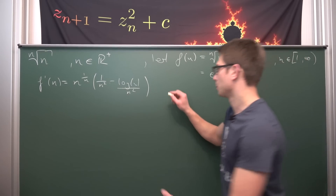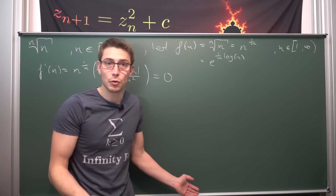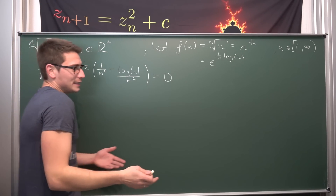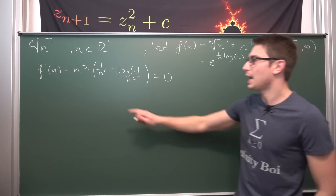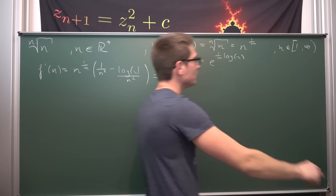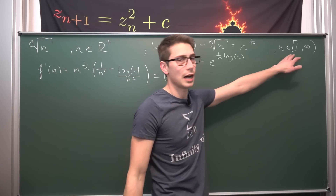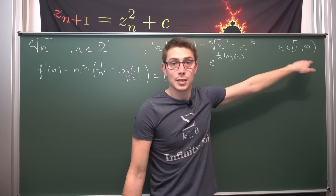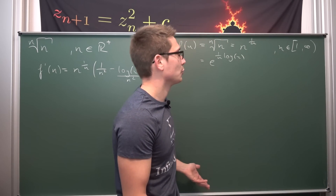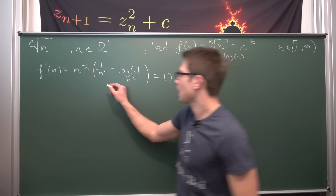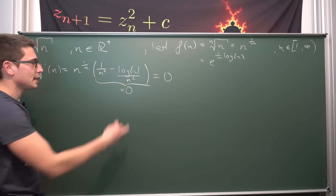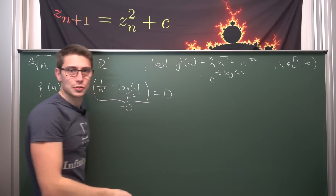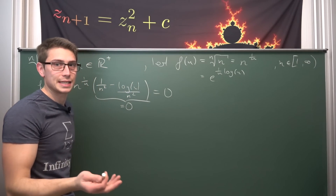We set the first derivative equal to 0 because we want to find where the slope is 0 — at a maximum or minimum. On our domain, the factor n to the 1 over n can only be 0 in a limit, not for any finite value, because the exponential function only goes to 0 at negative infinity. So the part that must equal 0 is 1 over n squared minus log of n over n squared. Multiplying both sides by n squared (since n ≠ 0), we get 1 minus log of n = 0.